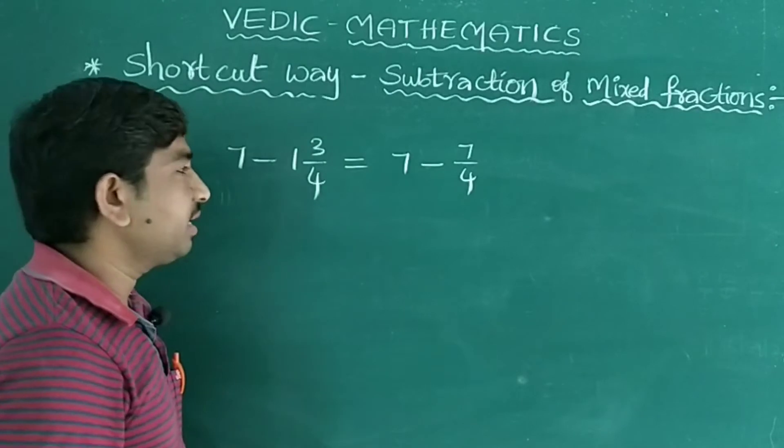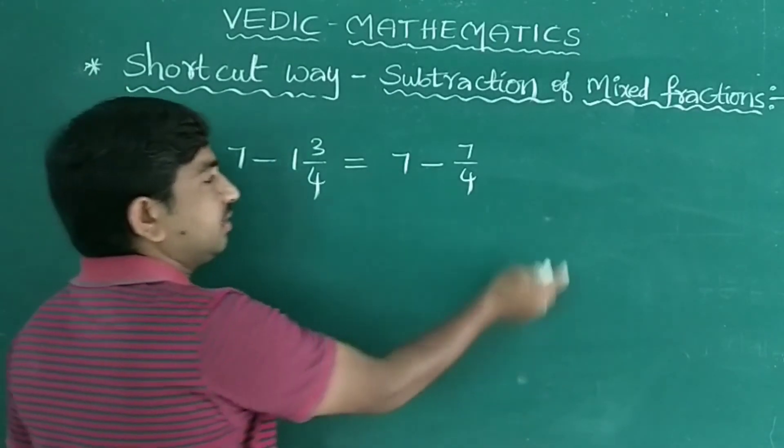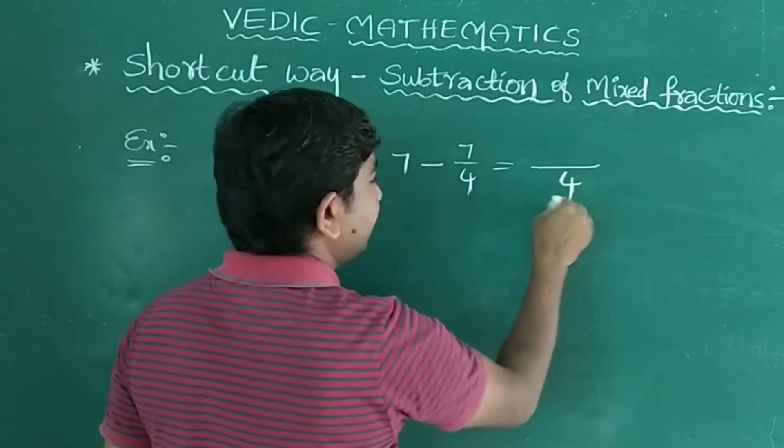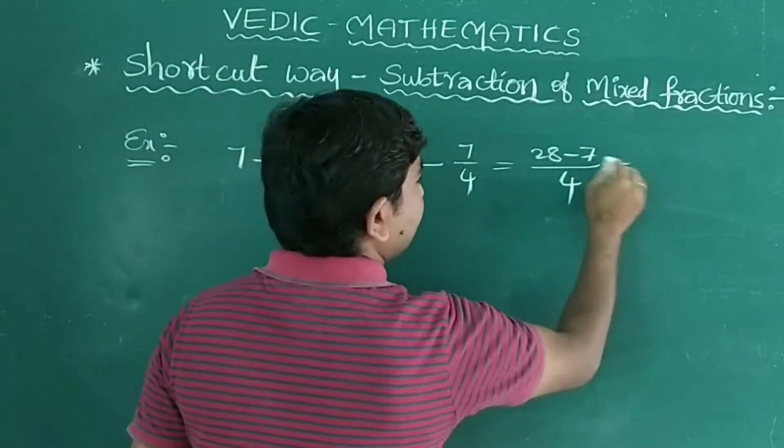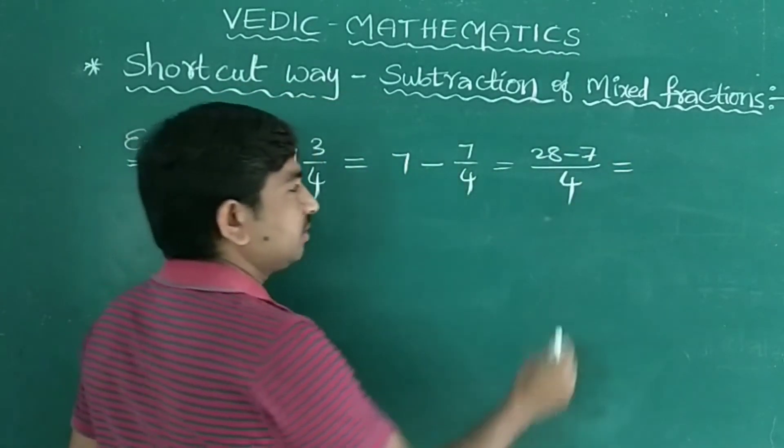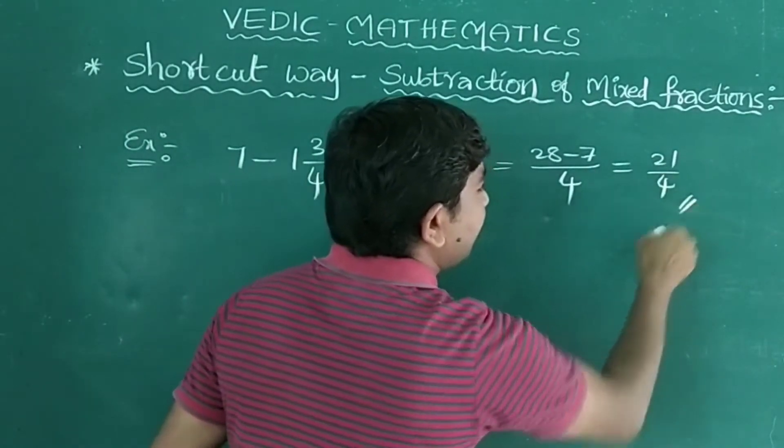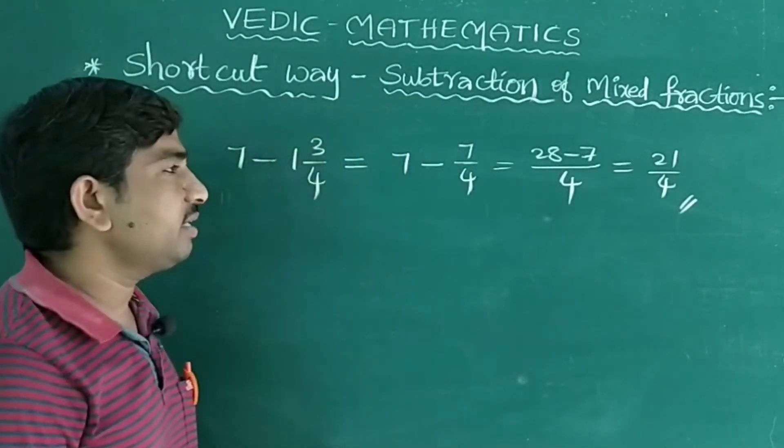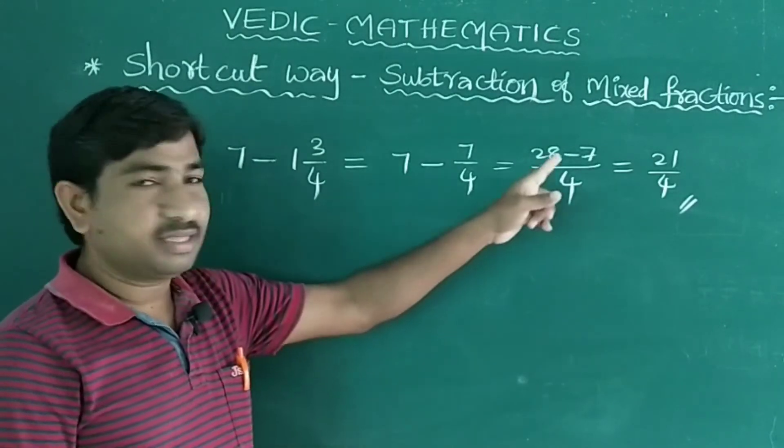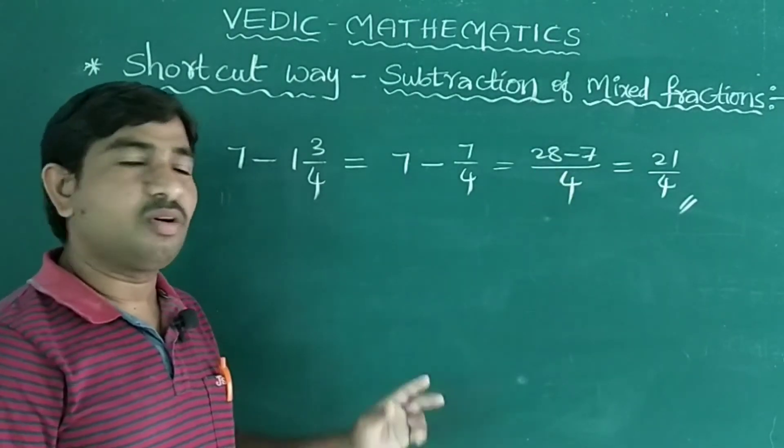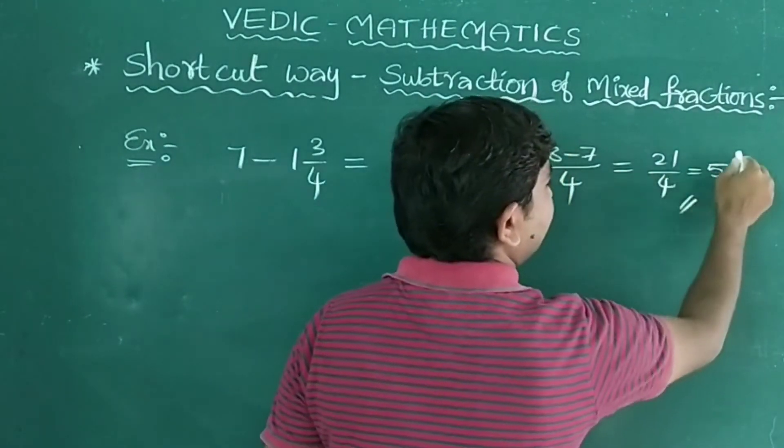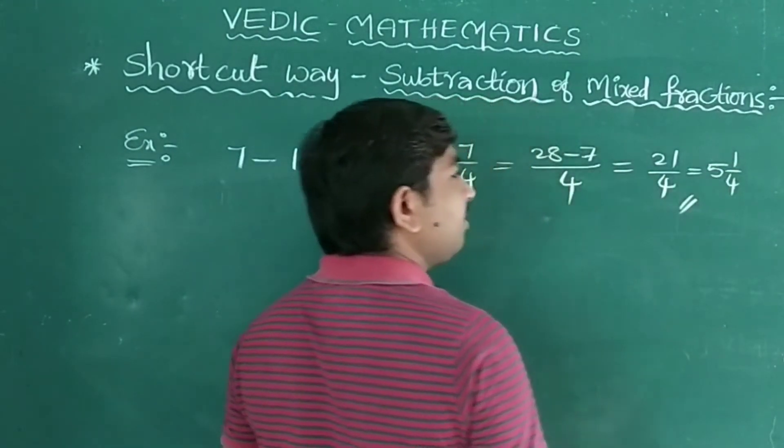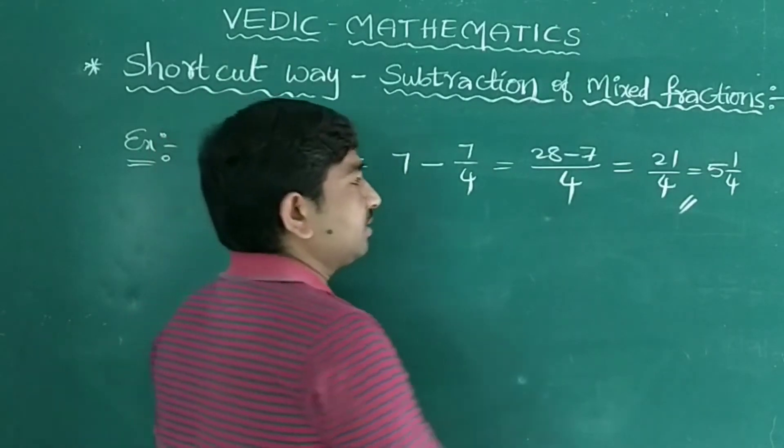Now we can take the LCM for this. What is the LCM? 4 is the LCM. 4 times 7 is 28 minus 7. So 28 minus 7 is how much? 21/4, this is the answer. And if you convert that into again mixed fraction, what you will get? 4 times 5 is 20, 21 divided by 4. So 5 1/4 is the final answer.